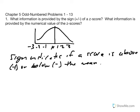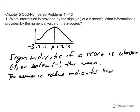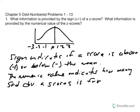Next, the information provided by the numeric value of the z-score simply tells us how many standard deviation units that score is from the mean. So the numeric value indicates how many standard deviation units a score is from the mean. Both of these together give us a sense of the location of a particular score — are we above or below the mean, and how far?